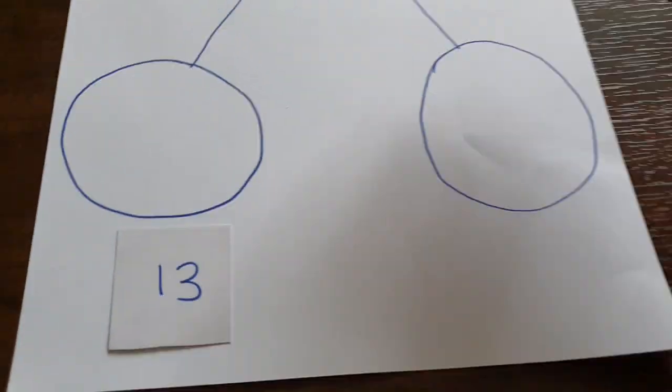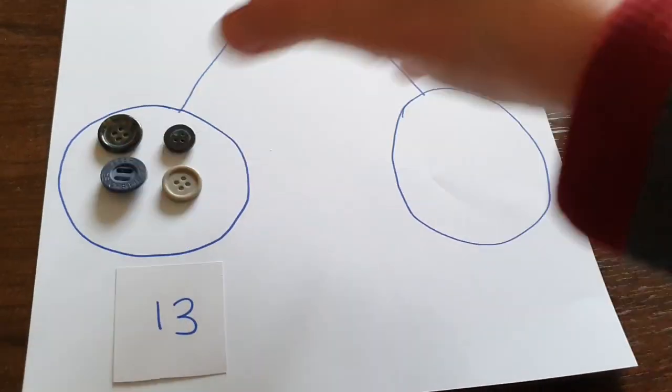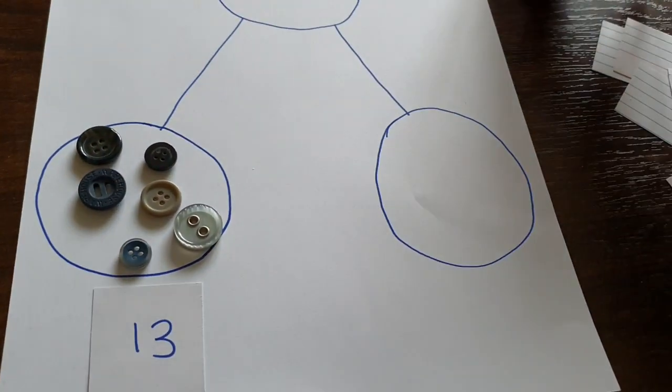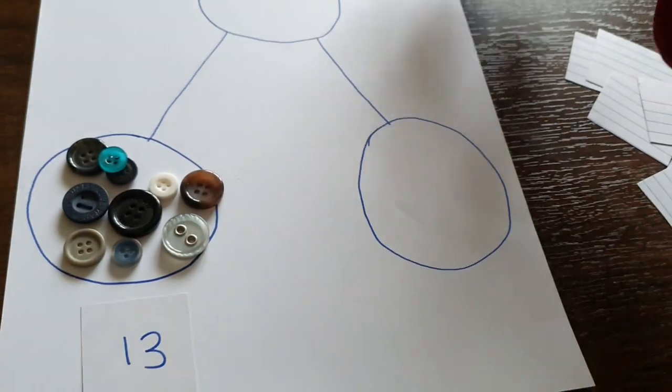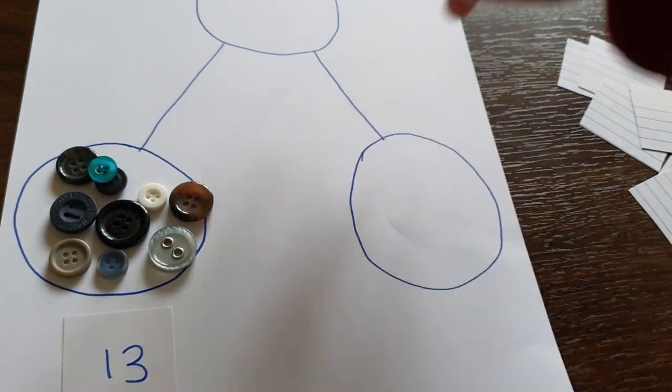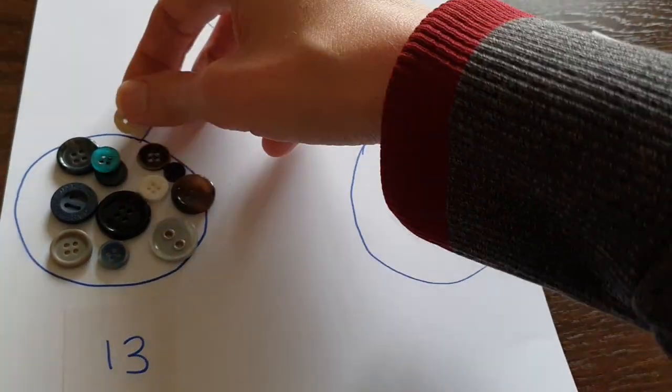And what you can do is if you pick two numbers, you can have these numbers as your parts. So 13—1, 2, 3, 4, 5, 6, 7, 8, 9, 10, 11, 12, 13.